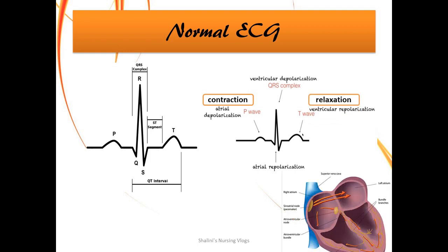Correlating the two pictures: P wave denotes atrial depolarization — contraction of the atria. Then you have ventricular depolarization, that is the QRS complex, with the ventricles contracting. Then ventricular repolarization — relaxation of the ventricles. Atrial repolarization is believed to happen between the P wave and the QRS complex. It is a quick process, so it is not clearly depicted in the ECG wave.